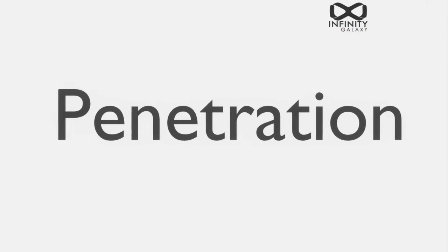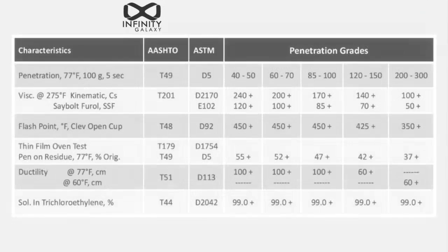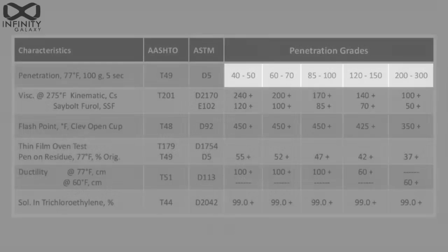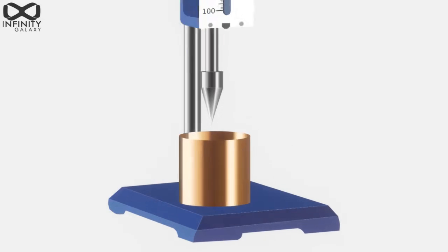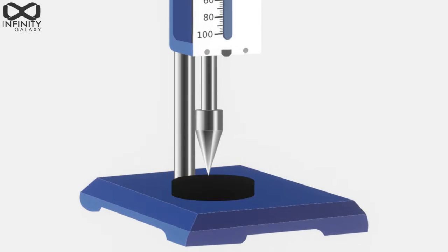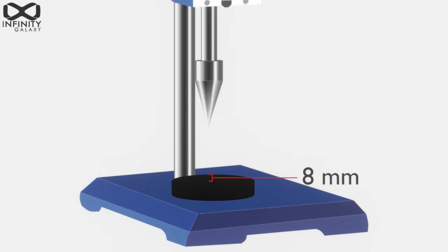Penetration. The recent numbers in the penetration grades indicate the penetration test result. When the bitumen is soft, the penetration is more. So bitumen 80-100 means it penetrates about 8 mm to 10 mm.